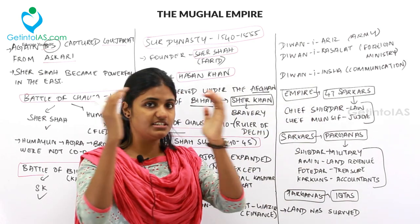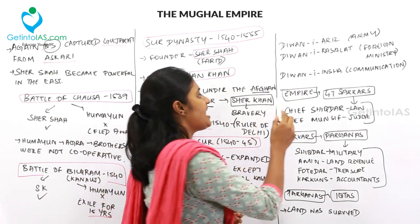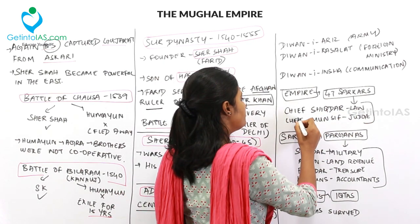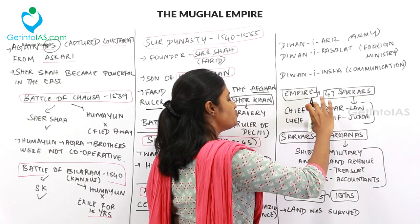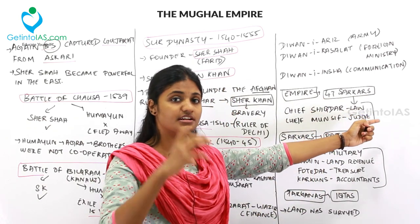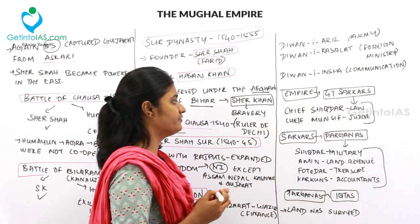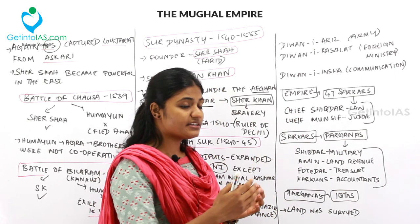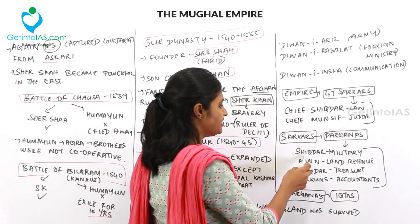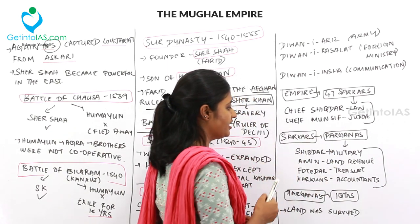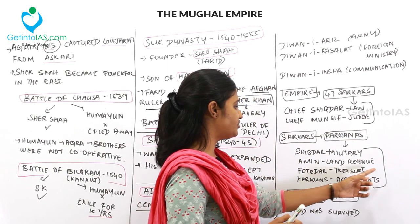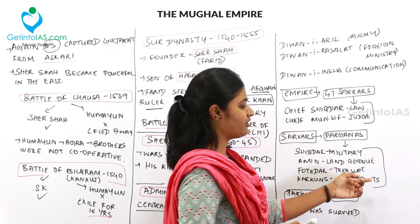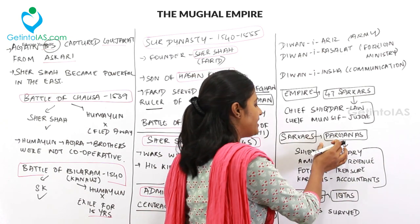Each sarkar was administered by a chief shikdar who maintained law and a chief munsif who served as judge. Under parganas, the shikdar handled military matters, the amin managed land revenue, the fortudar took care of the treasury, and the karkuns were accountants.